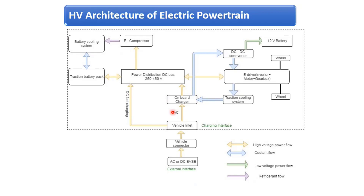The onboard charger is small due to its lower power rating, making it suitable to fit inside the vehicle. However, if you want to charge the battery at a faster rate, the size of the power electronic components increases and cannot be kept inside the vehicle. This is why the high-power charging facility is placed externally, directly charging the high voltage battery pack.